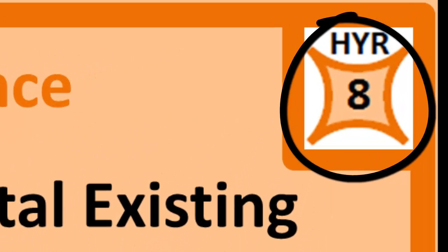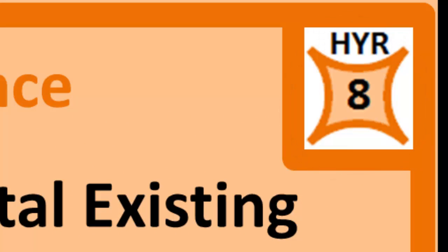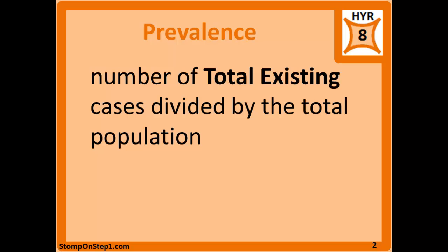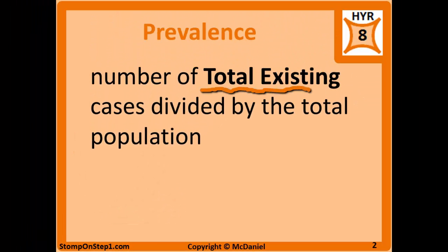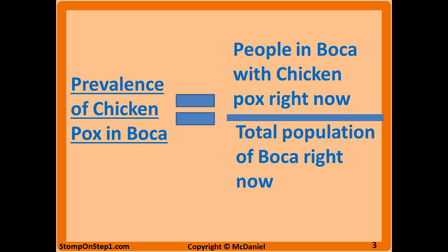You can see here that I give prevalence a high yield rating of 8. For those who don't know what that is, it's a rough estimate on a scale from 1 to 10 of how important each topic is for Step 1. Prevalence is the number of total existing cases divided by the total population — the proportion of the population that has whatever disease you're talking about.